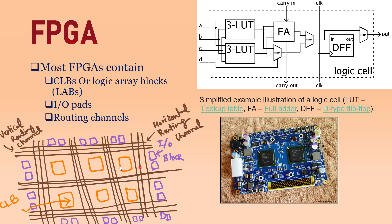When you program a logic function into a CLB, depending on how large the function is, you may use multiple CLBs. The routing channels connect and route data from one CLB to another, so the full function can be implemented. IO blocks, as mentioned, interface the external world to the FPGA.